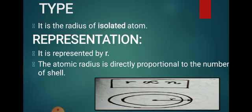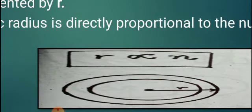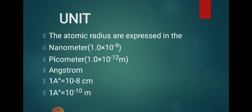Atomic radii refers to the radius of an isolated atom — we discuss one atom at a time. It is always represented by the symbol r. The atomic radii is directly proportional to the number of shells: as the number of shells increases, the atomic radius also increases.